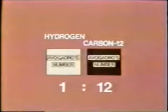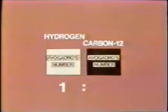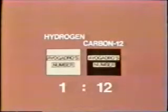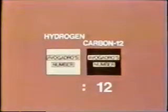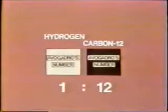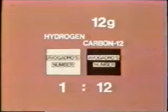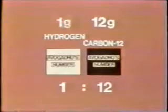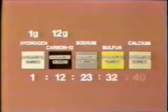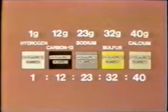So, Avogadro's number of carbon atoms has 12 times the mass of Avogadro's number of hydrogen atoms. And we ourselves decided that Avogadro's number of carbon atoms has a mass of 12 grams. It follows that Avogadro's number of hydrogen atoms has a mass of 1 gram. In the same way, even though we don't know what the actual number is, we know the mass of Avogadro's number of sulfur is 32 grams, and so on.